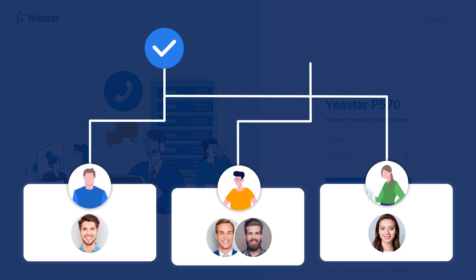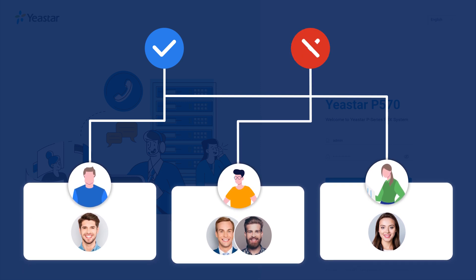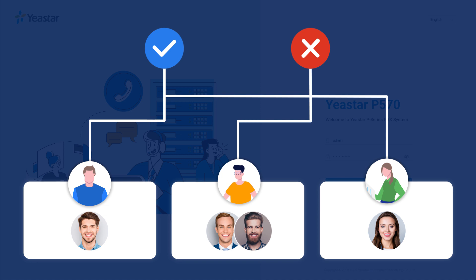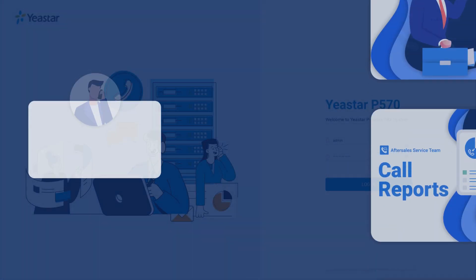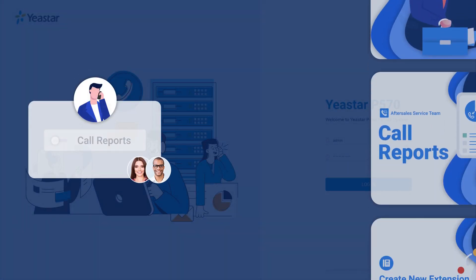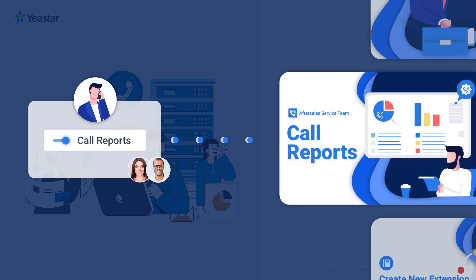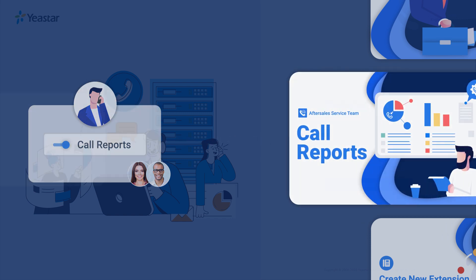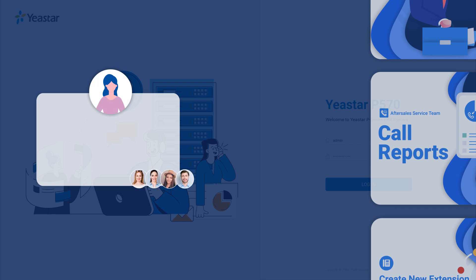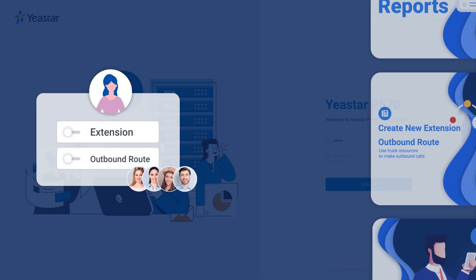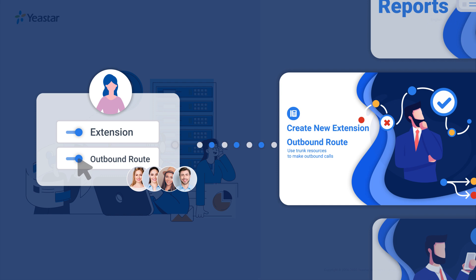The system maintains security by not allowing access to features irrelevant to the role. For example, a supervisor of the after-sale service team should be able to log into the system and check the team's call reports. Meanwhile, the IT manager needs permission to create new extensions for new employees and manage their privilege to use trunk resources to make outbound calls.